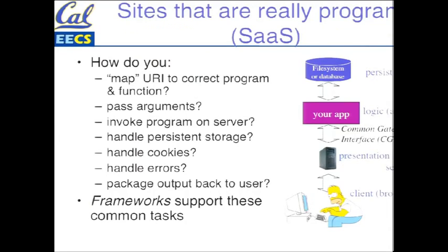If you're gonna run a program to generate a page, you need to solve a handful of problems. You've got to figure out, given a URI that's coming in, what program and what function within that program should you be calling? What if you need to pass arguments to it? What if you need to store things across requests — for example, if the user's in the middle of buying stuff, you need to remember what they're buying so their shopping cart won't be empty. There are common tasks that come up over and over again, and that should trigger design patterns. One pattern that arose is to divide these responsibilities up into three big categories.